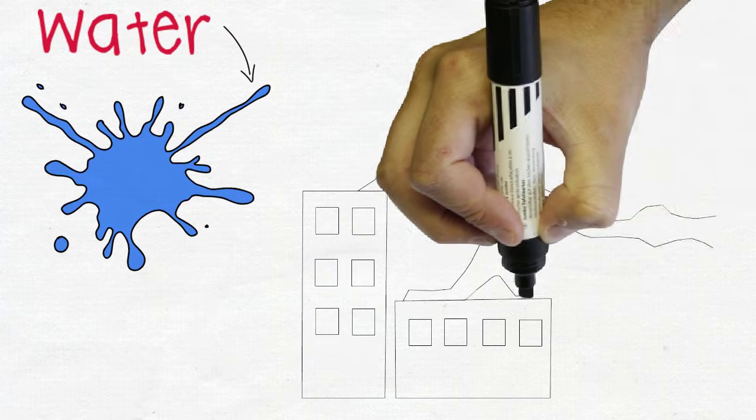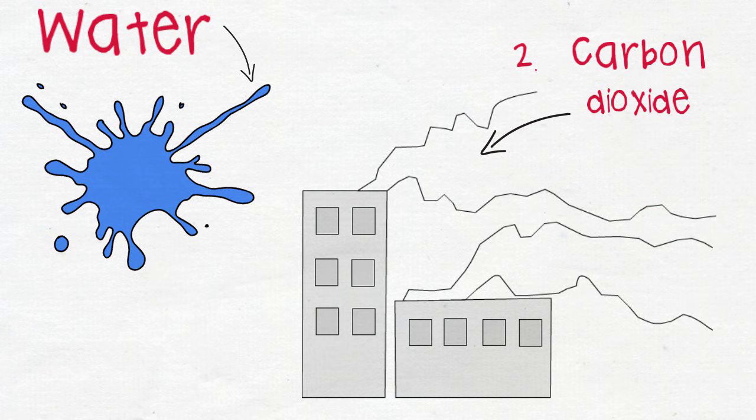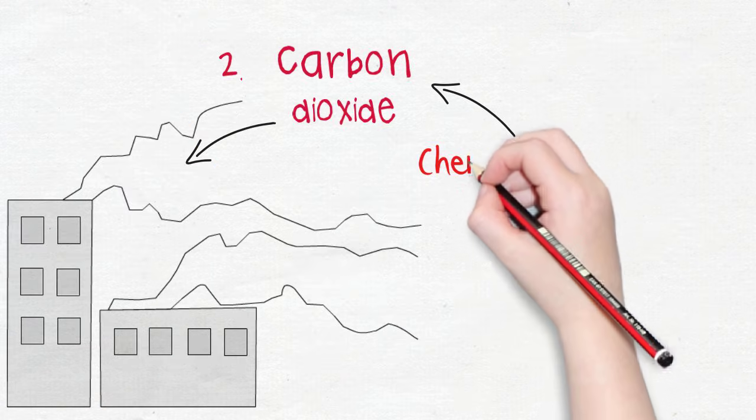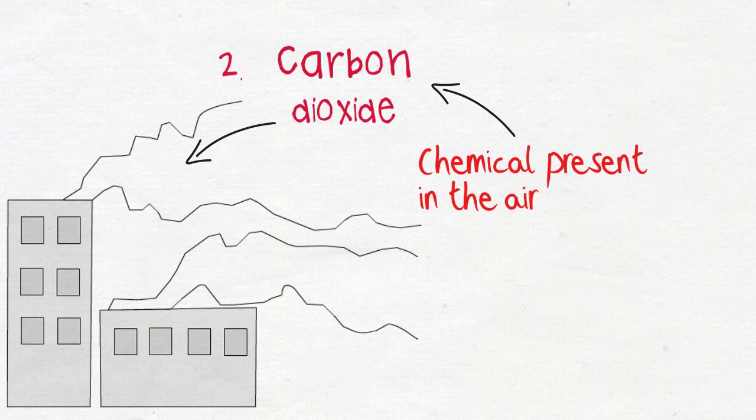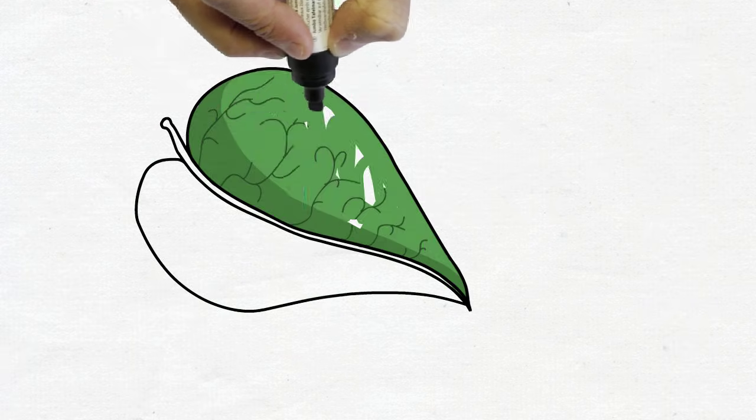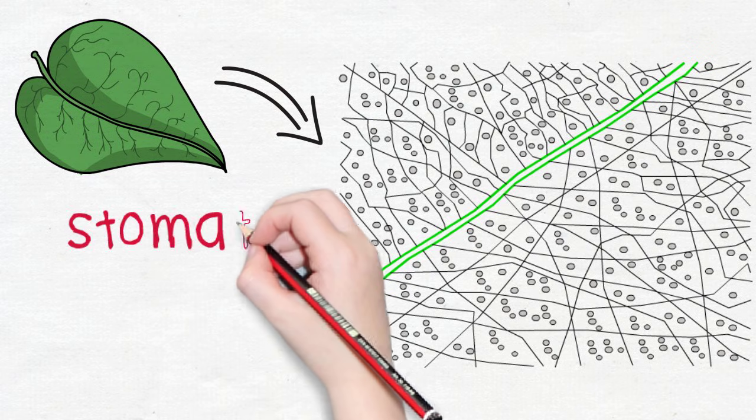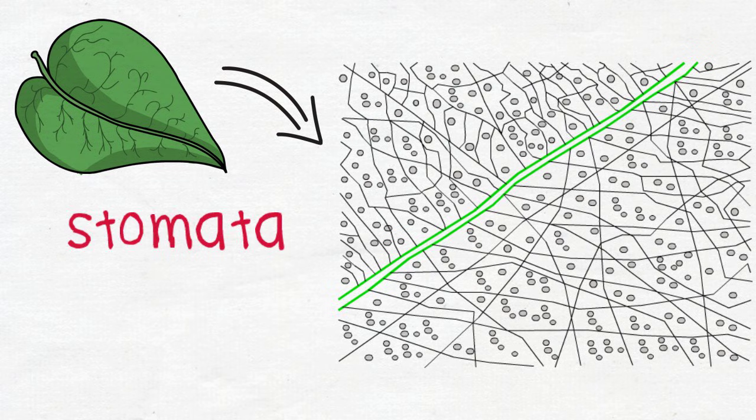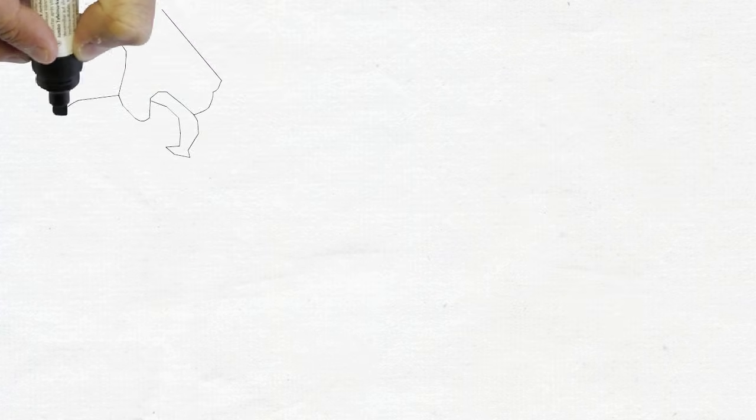The second thing plants need to make their food is carbon dioxide. You have probably heard of carbon dioxide. It is a chemical that is in the air. So how do plants absorb carbon dioxide? Well, plants have small openings on their leaves. These are called stomata. Carbon dioxide is absorbed through these small openings.